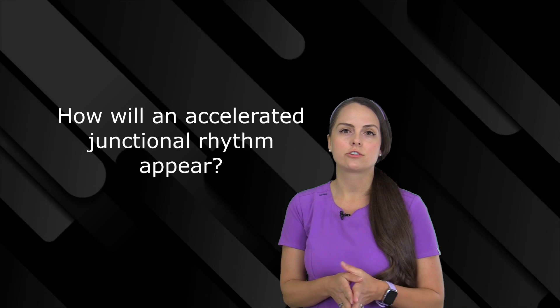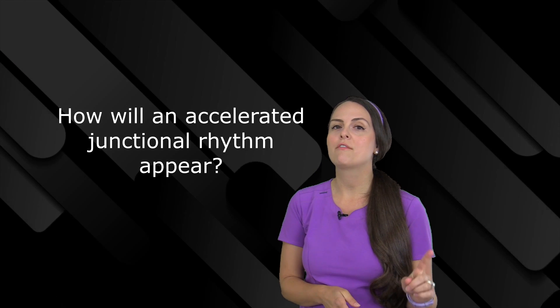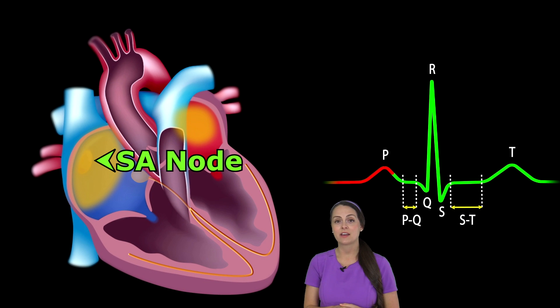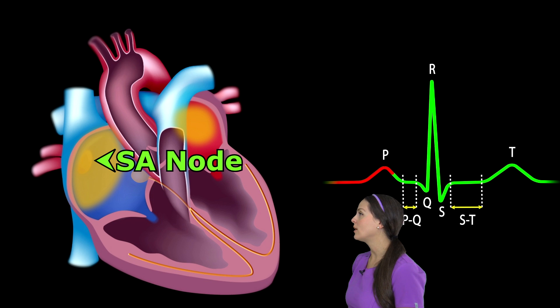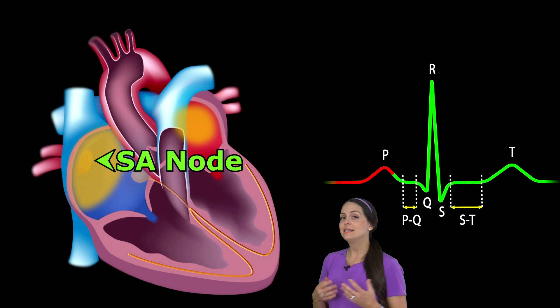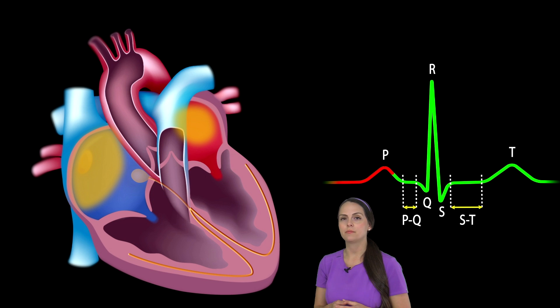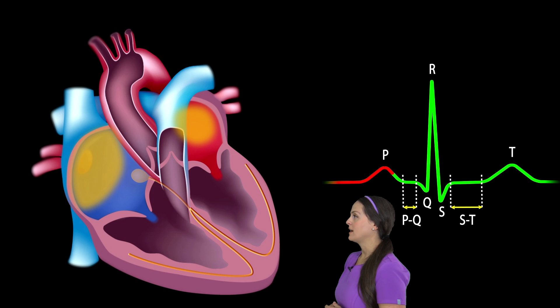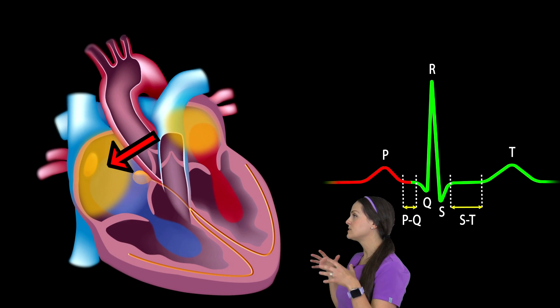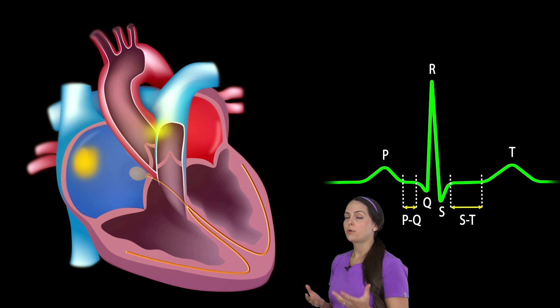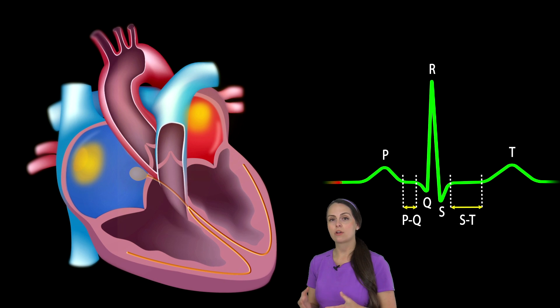So how is accelerated junctional going to appear? First, let's go over how an ECG waveform should appear normally and how it's created, then compare that to accelerated junctional. The electrical conduction system starts in the SA node, the sinoatrial node, found in the upper part of the right atrium. It's the site for the main pacemaker, causing your heart to beat at a rate of 60 to 100 beats per minute. Whenever the SA node fires, it sends electrical signals downward throughout the atria, causing atrial depolarization which leads to contraction of the atria.